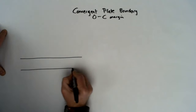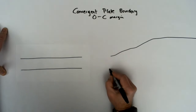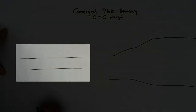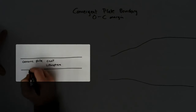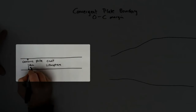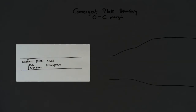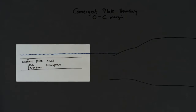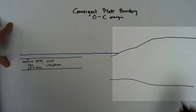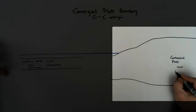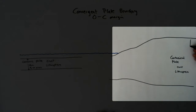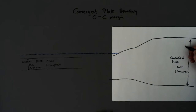This diagram is in the plate tectonics unit. Looking at the convergent plate boundary, which is oceanic converging with continental. These plates are different; they differ in thickness, composition, and density, and this creates certain processes and features at this boundary. The oceanic plate is thinner, made of crust and lithosphere, and the continental plate is thicker, also made of crust and lithosphere.